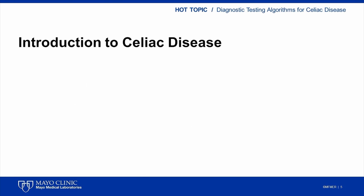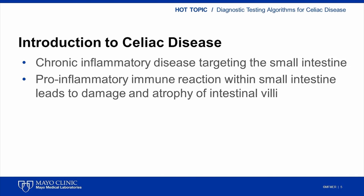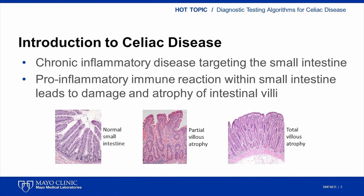Celiac disease is a chronic inflammatory condition that primarily affects the small intestine. It is caused by an inflammatory response mounted by the patient's own immune system, which ultimately results in damage and atrophy of the villi within the small intestine. In the figure to the left, you see a biopsy of a normal small intestine with intact villi. In the middle and rightmost figures, you see the partial and total villus atrophy that can occur in celiac disease as a result of the inflammatory response.